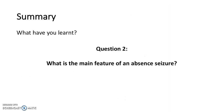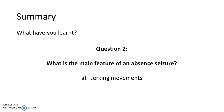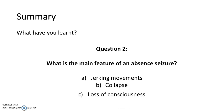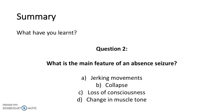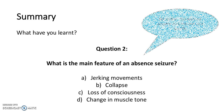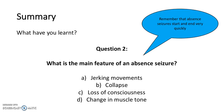Question 2: what is the main feature of an absence seizure? Is that jerking movements, collapse, loss of consciousness, or a change in muscle tone? Remember that absence seizures start and end very quickly. The answer is loss of consciousness — it's a transient loss of consciousness.